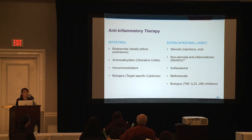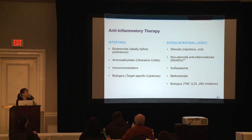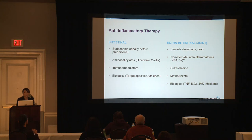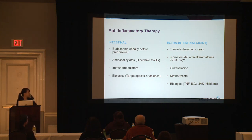The biologic targets that help the joints in particular include TNF-alpha — including medications like infliximab or Remicade, and Humira or adalimumab — IL-23, which includes medications like Stelara or ustekinumab and Skyrizi, and then JAK inhibitors, which include medications like Xeljanz or tofacitinib and Rinvoq or upadacitinib.